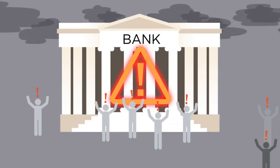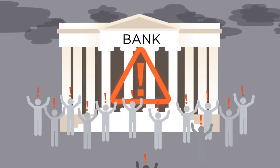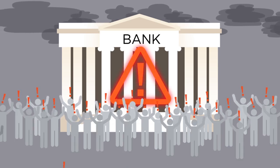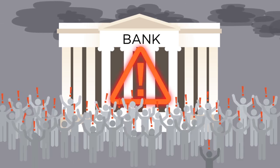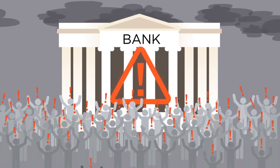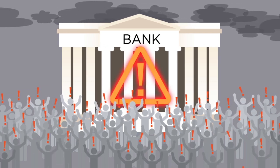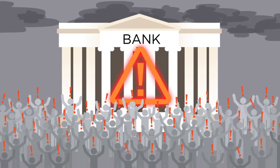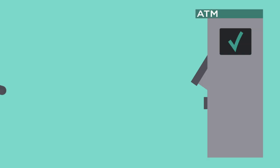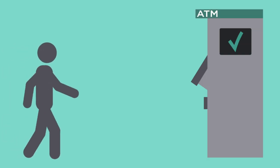Banking panics are more likely to occur under a gold standard regime. The reason for this is because during a bank panic or a bank run, people are running to the bank to redeem their bank notes for gold, and the banking system as a whole may not have enough gold to honor all of these redemptions if they were to occur at the same time.